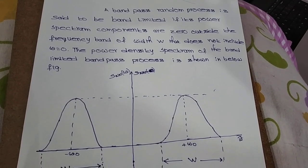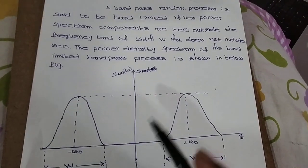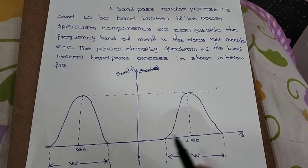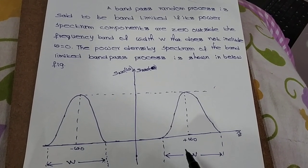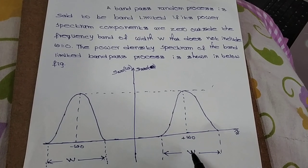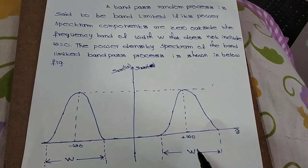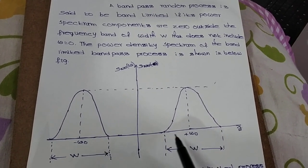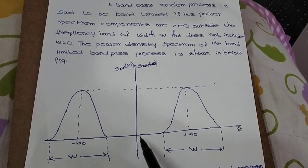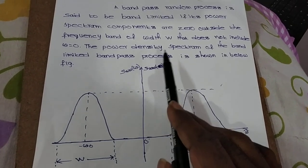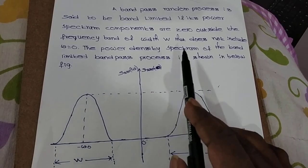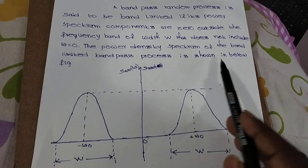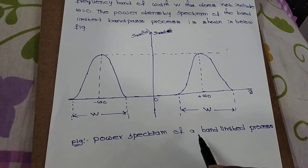A band pass random process is said to be band limited if power spectral components are zero outside the frequency band of width W, that does not include omega equal to zero. Thus the power density spectrum of the band limited band pass process is shown in figure.